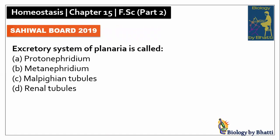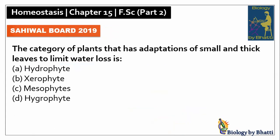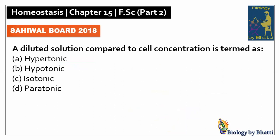Sahiwal Board 2019: the excretory system of planaria is called protonephridium, the answer is A option. The category of plants that has adaptations of small and thick leaves to limit water loss is xerophytes, the answer is B option. Sahiwal Board 2018: a diluted solution compared to cell concentration is termed hypotonic, the answer was B option.